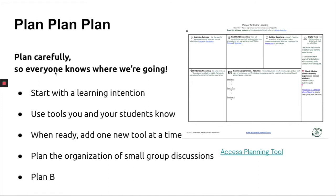Basically, what it means is that everybody should know where they're going and how they're going to get there. You should start with a learning intention. Use the tools that you and your students already know, or if not, take the time to teach how those tools work and let the students play with them. Plan the organization of small group discussions if you're going to do C1, and think about a plan B if things aren't working out as expected. The planner helps you see where you're going, and it also shows students where they're going and how they'll get there — extremely important in an online class.